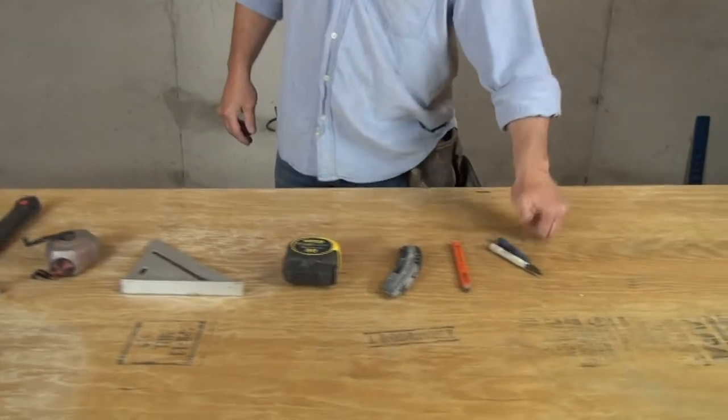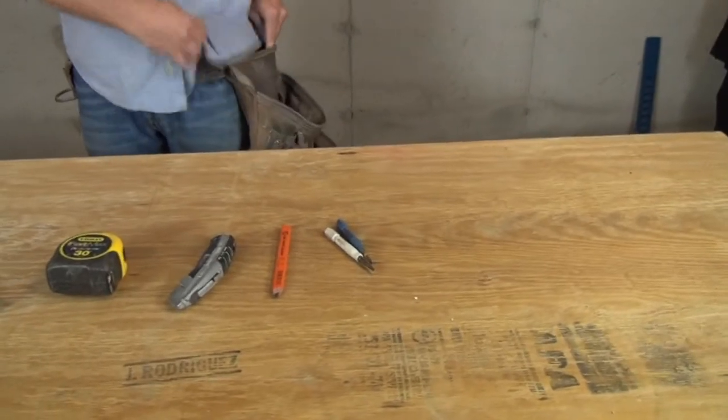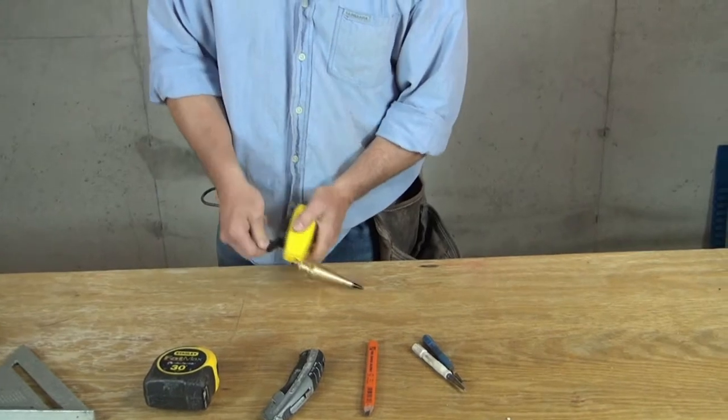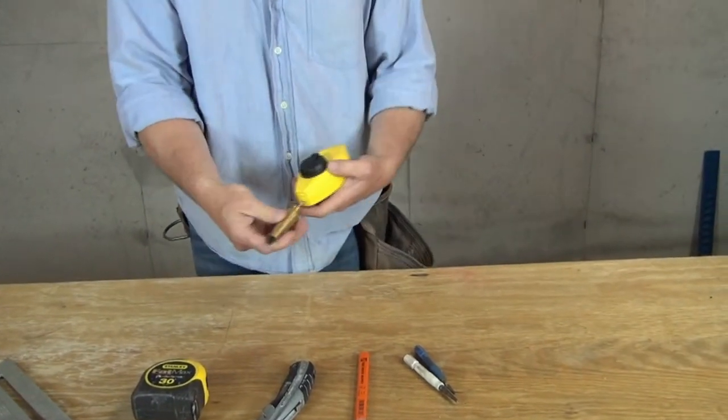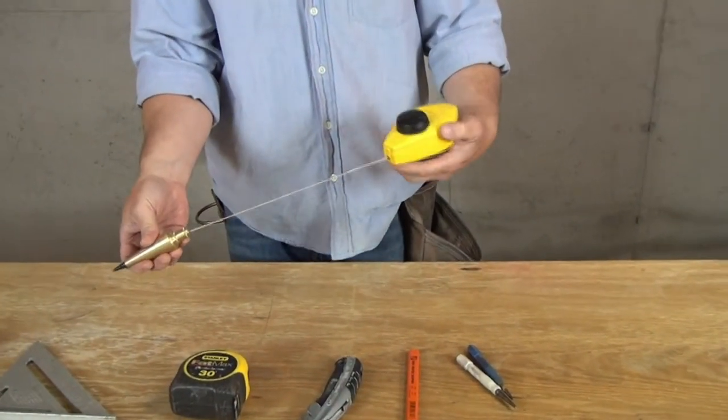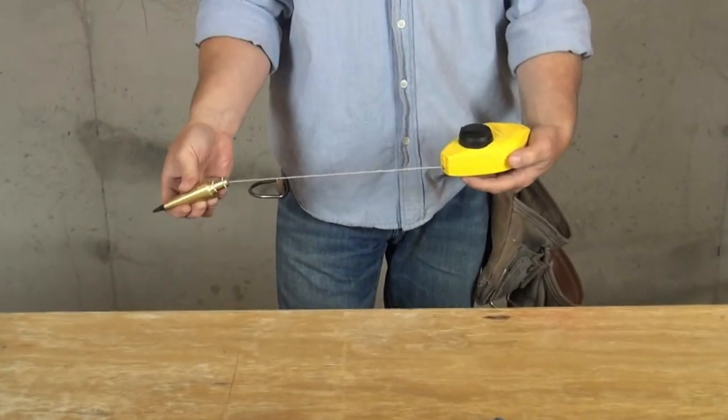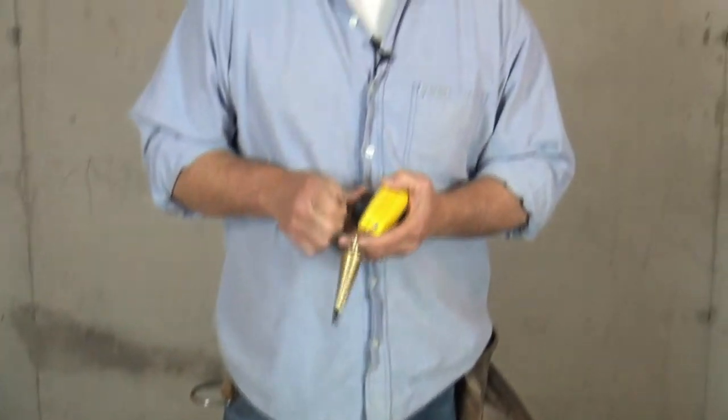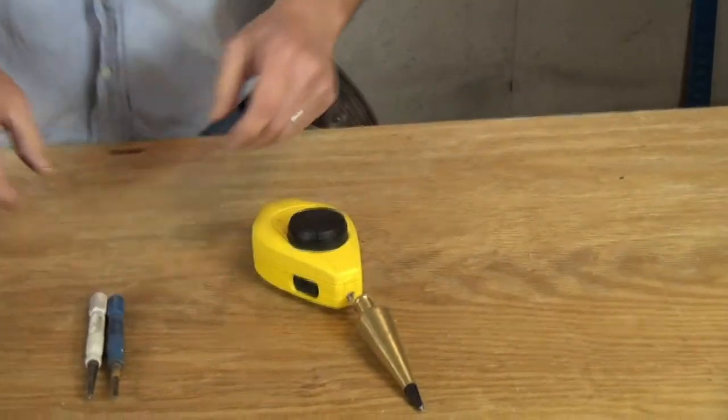Now I also have, during the framing stage, my plumb bob. You can see this is a brass plumb bob hooked to basically a chalk box where I'm just using it to reel my plumb bob back into the box. That's all that I'm carrying in my belt, but these are the essential tools that you need to have.